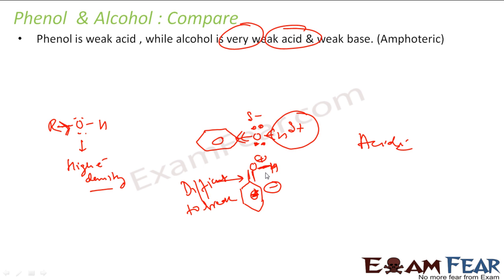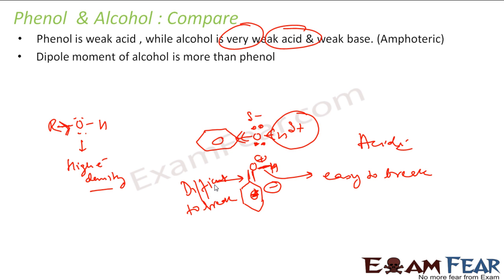The C-O bond in phenol has partial double bond character due to resonance, which also means the C-O bond length is shorter than usual. The dipole moment of alcohol is greater than that of phenol.